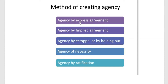With regard to the contract of agency, agency has not been defined in the Indian Contract Act, but it has defined who is an agent and who is a principal. The definition of an agent has been given, but the definition of agency itself has not been given in the Indian Contract Act. So we have to write about who is an agent and who is a principal.